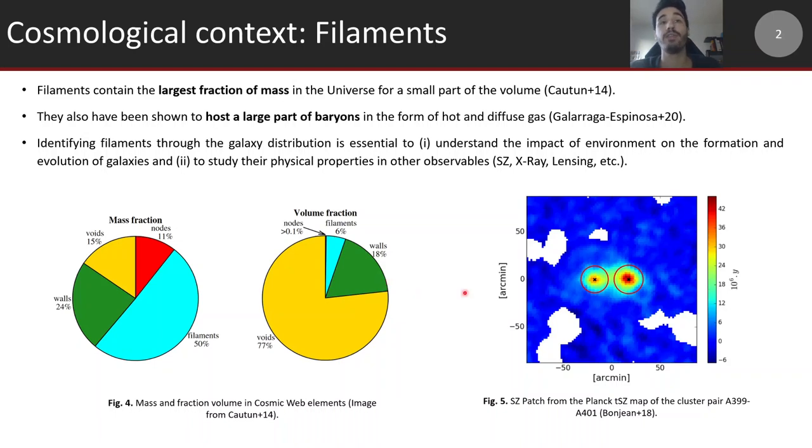Identifying filaments through galaxies is interesting to study their physical properties in other observables like SZ, X-rays, or lensing. It's also very interesting to understand the complex interplay between large-scale environments and the formation and evolution of galaxies, since we expect different characteristics for galaxies if they lived in different environments such as filaments, walls, or nodes.